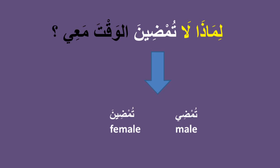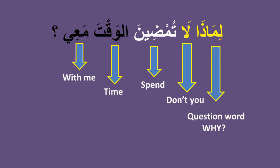لماذا لا تمضين الوقت معي؟ — Here تمضي is in the present tense, but talking to a female, so it becomes تمضين. تمضي is for male, تمضين is for female. الوقت means 'time', معي means 'with me'. سألت الجرادة — the grasshopper asked.